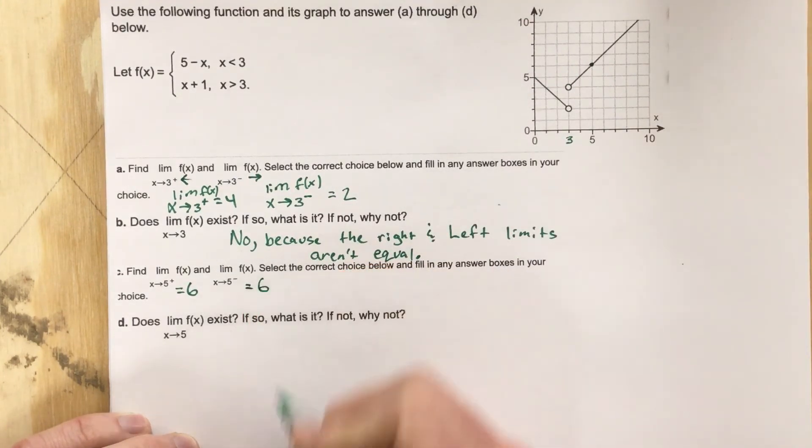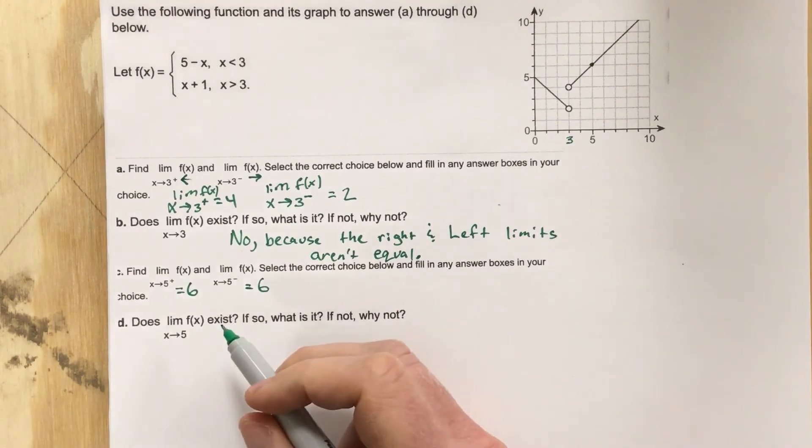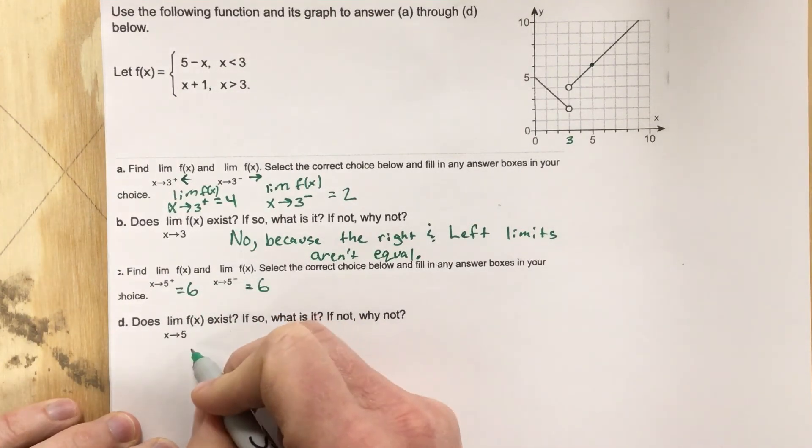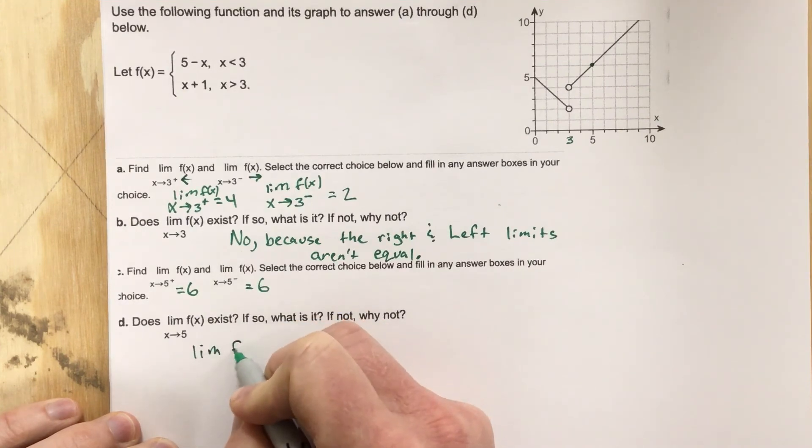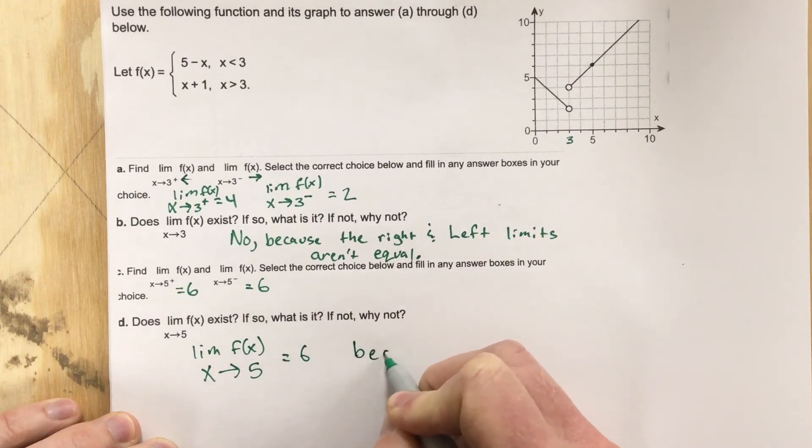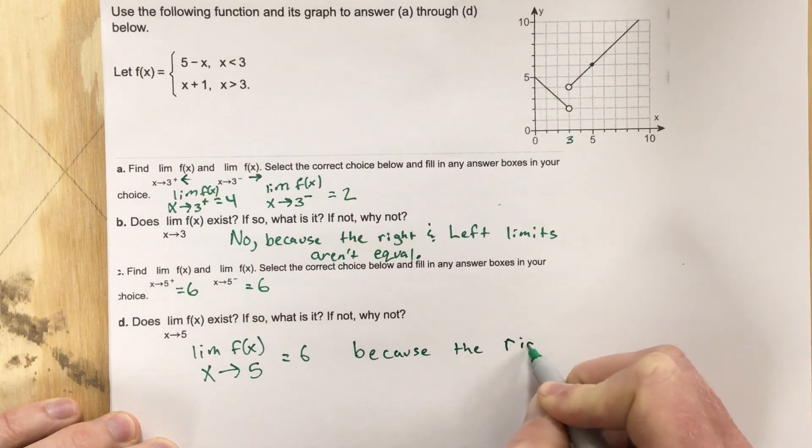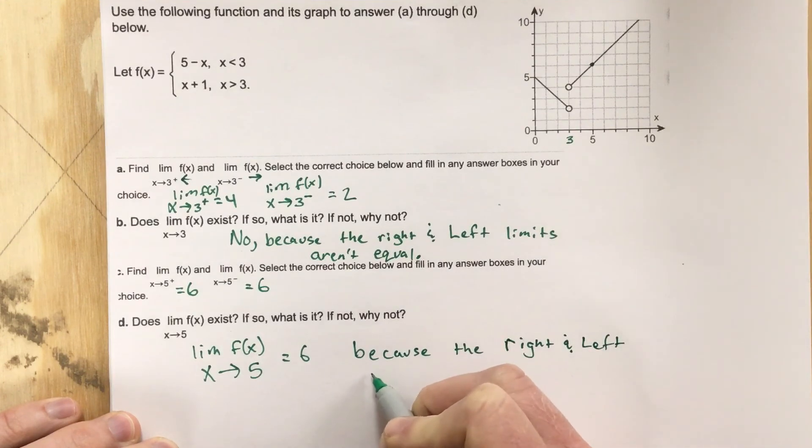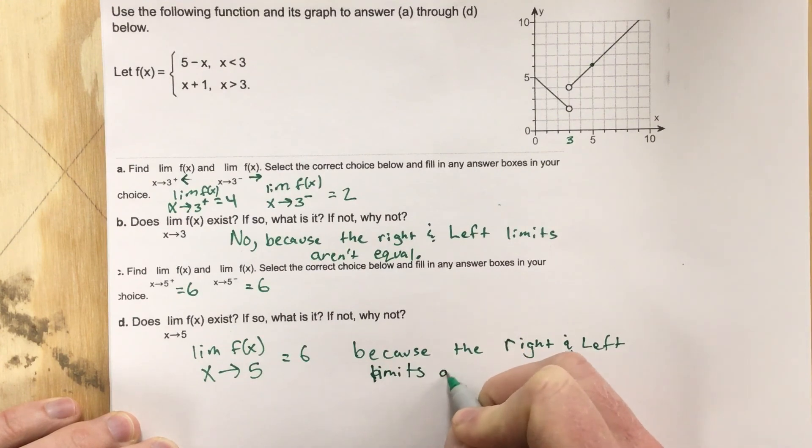So does f of x exist for the limit as x approaches five? Well, because the limit on each side equals the same number, we can say that the limit of f of x as x approaches five equals six because the right and left limits are equal. That's the key. They're equal.